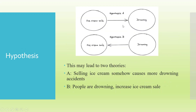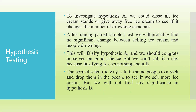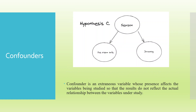Now the question arises: in both scenarios we will not get any significant value of the test, then why is our graph showing some relationship? The answer is there are confounders — a season is present. A confounder is an extraneous variable whose presence affects the variables being studied, so that the results do not reflect the actual relationship between the variables under study. In summer season, ice cream sales increase, and in summer season more people go near the beach for swimming, and if they don't know how to swim, they get drowned. So it is the season which is depicting the relationship between ice cream sales and the drowning incidence.